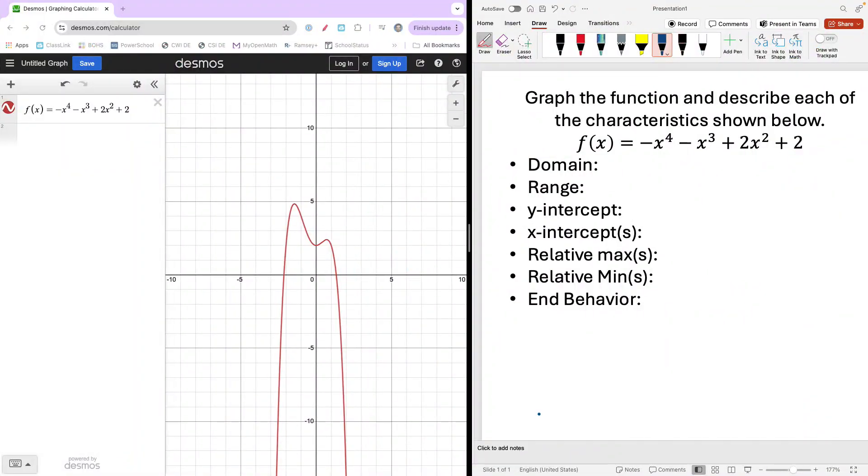All right, let's look at the graph of a polynomial function and describe some of its key characteristics. Here's the function we're given: f(x) equals negative x to the fourth minus x cubed plus 2x squared plus 2. We can see this is a fourth degree polynomial with a lead coefficient of negative 1. Based on what we've already seen, we should have an idea what its end behavior should be doing. We're going to graph this using Desmos or some other graphing tool and then describe these key features.